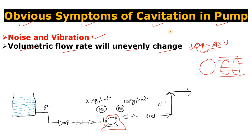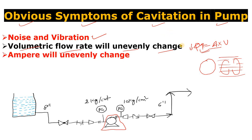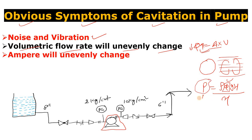The next symptom is that the ampere will unevenly change. The power for the centrifugal pump is rho times Q times g times H divided by efficiency. Since Q unevenly changes, power will also unevenly change, and therefore the ampere will also unevenly change. You have to check the ampere as well from the LCS.